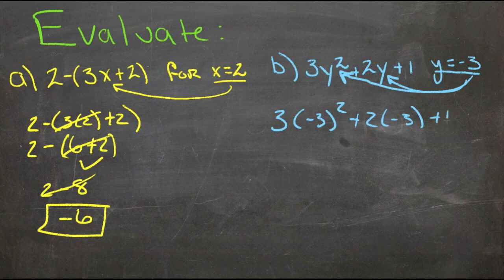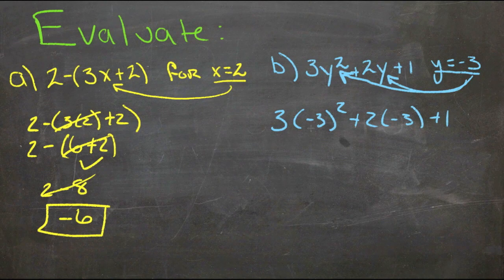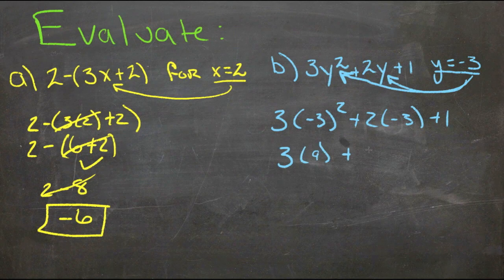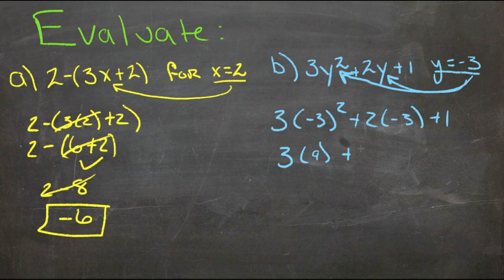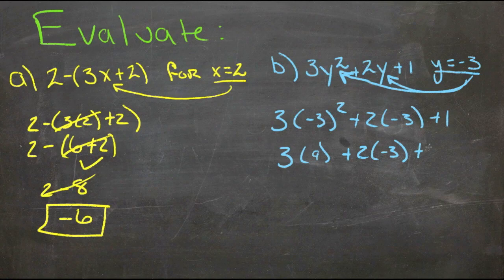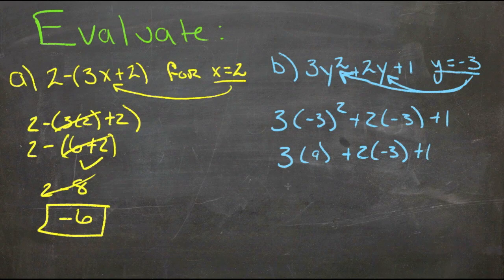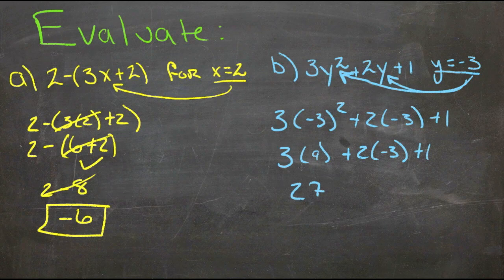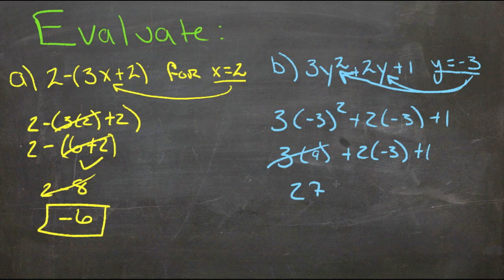Plus 1. Negative 3 squared is 9. 3 times 9 plus 2 times negative 3 plus 1. Now we'll do multiplication all the way left to right. 3 times 9 is 27, plus 2 times negative 3 is negative 6.